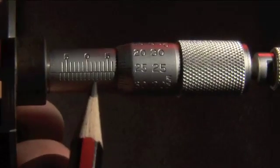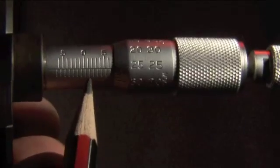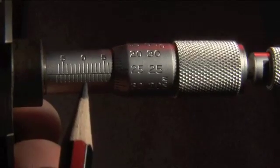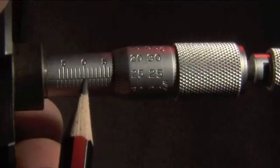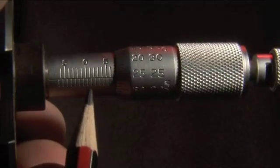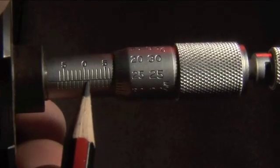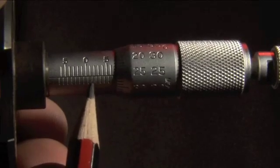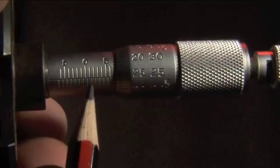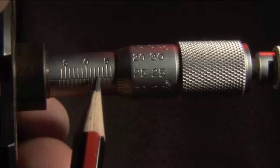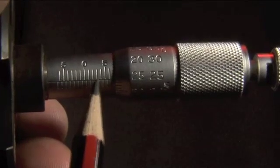You've also got marks beneath that scale, and they're the half millimetre marks. So that's zero, zero point five, one point zero, one point five, two point zero, two point five, three point zero millimetres, and so on.